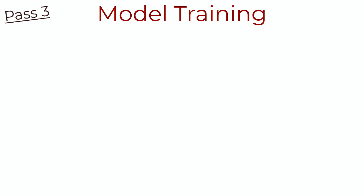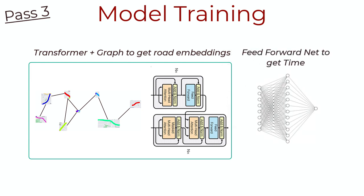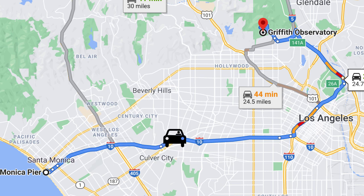Now onto pass three. How do we train this entire behemoth of a network? What I mean is, how do we learn the parameters of the two major models used here? The first being the transformer, which gets the encoding of the road segments via message passing. And then, how do we train the weights of the feedforward neural network, which uses the road segment embeddings to compute the time to traverse the said road segment? Training happens via back propagation. And to train, we need an objective to minimize or optimize.